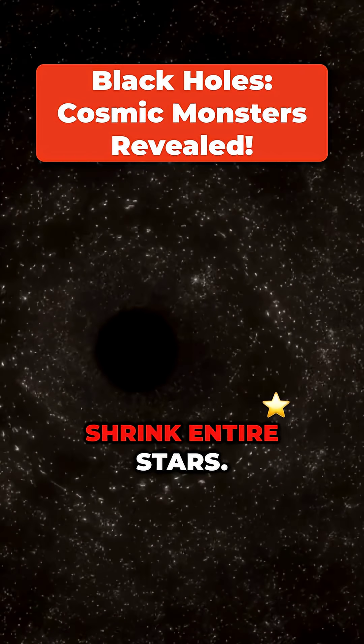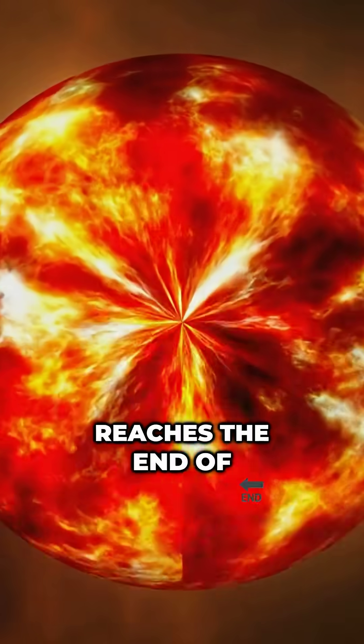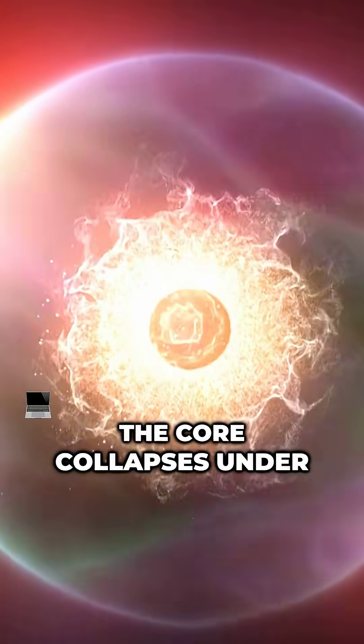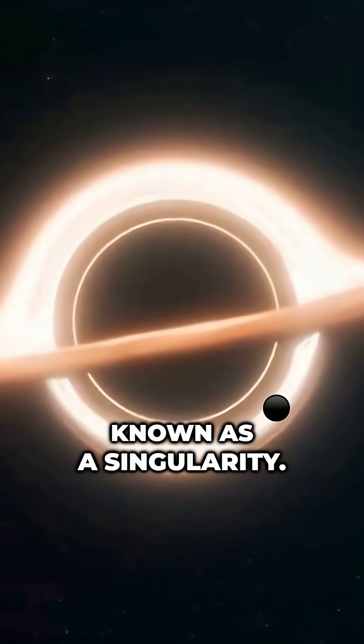A black hole can shrink entire stars. When a massive star reaches the end of its life, it undergoes a dramatic collapse. The core collapses under its own gravity, creating a dense point known as a singularity.